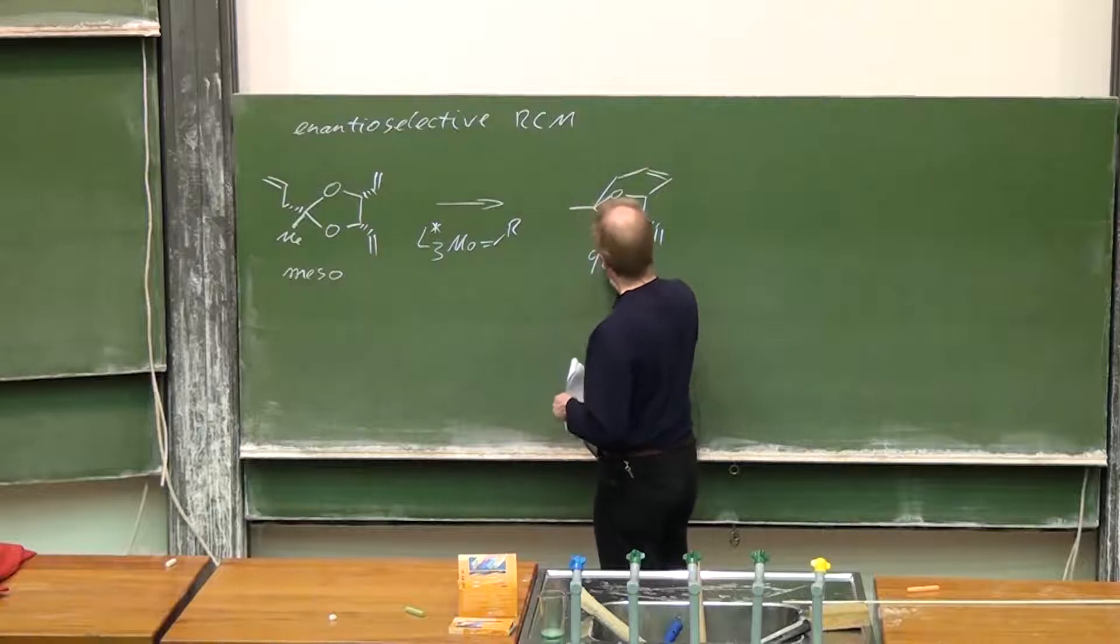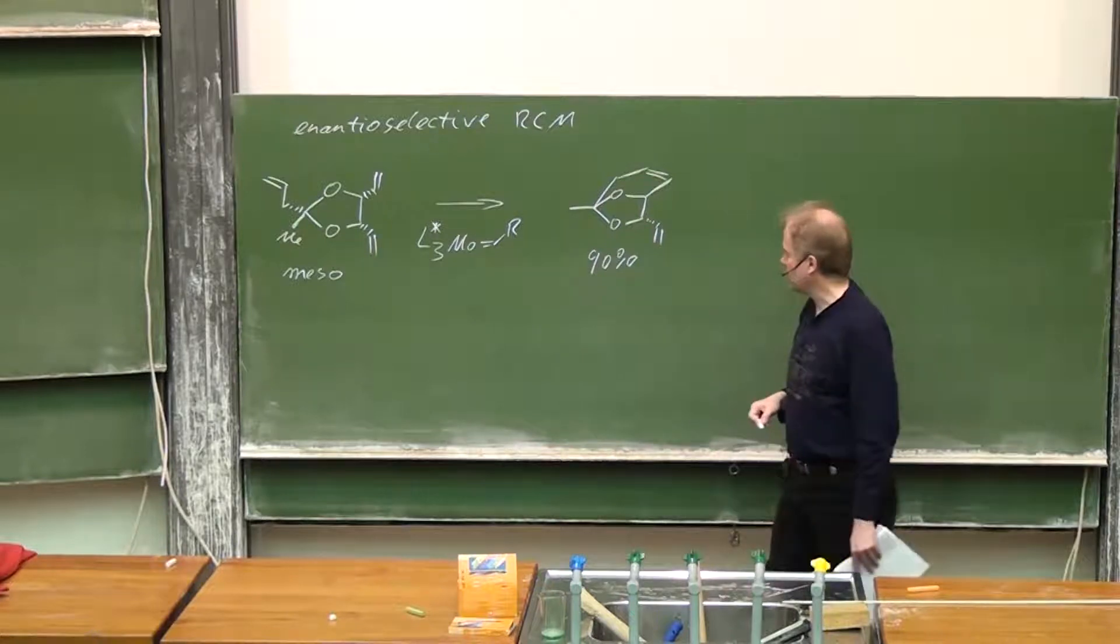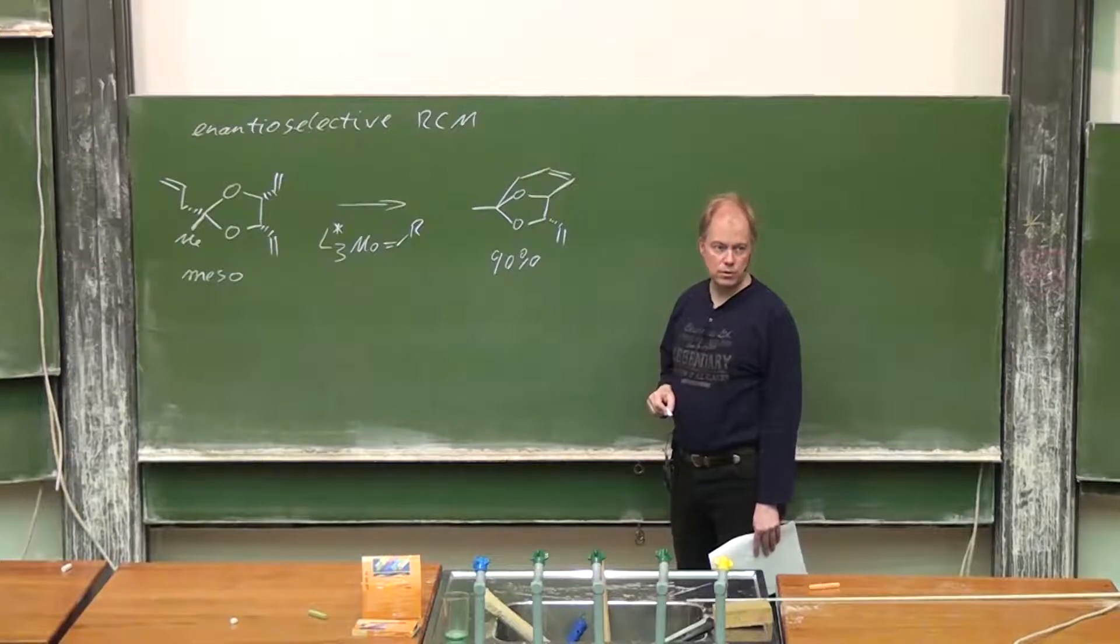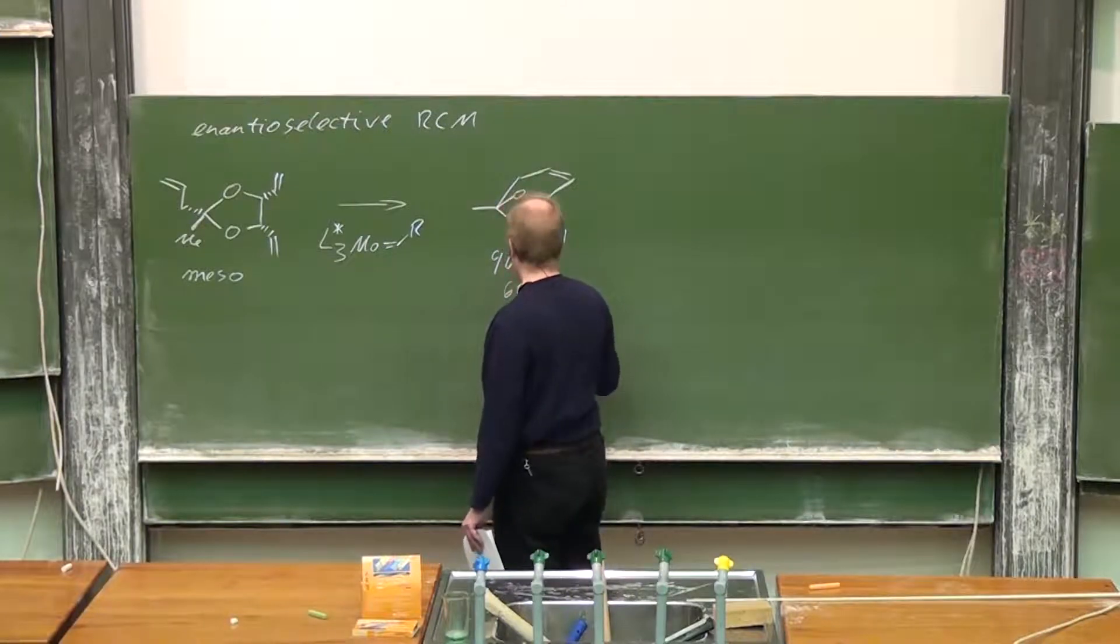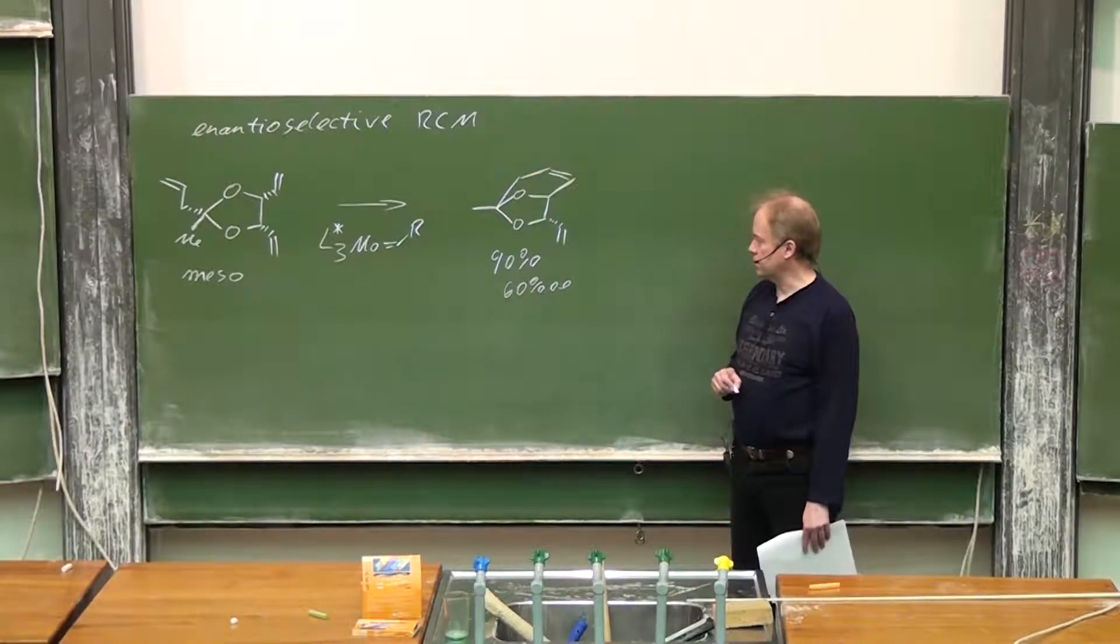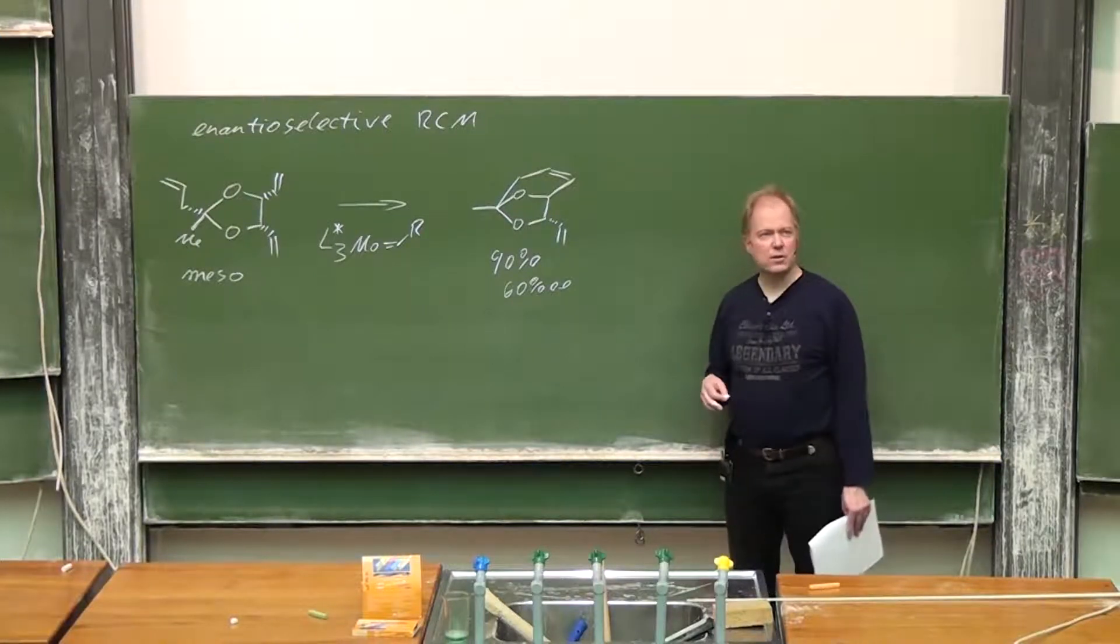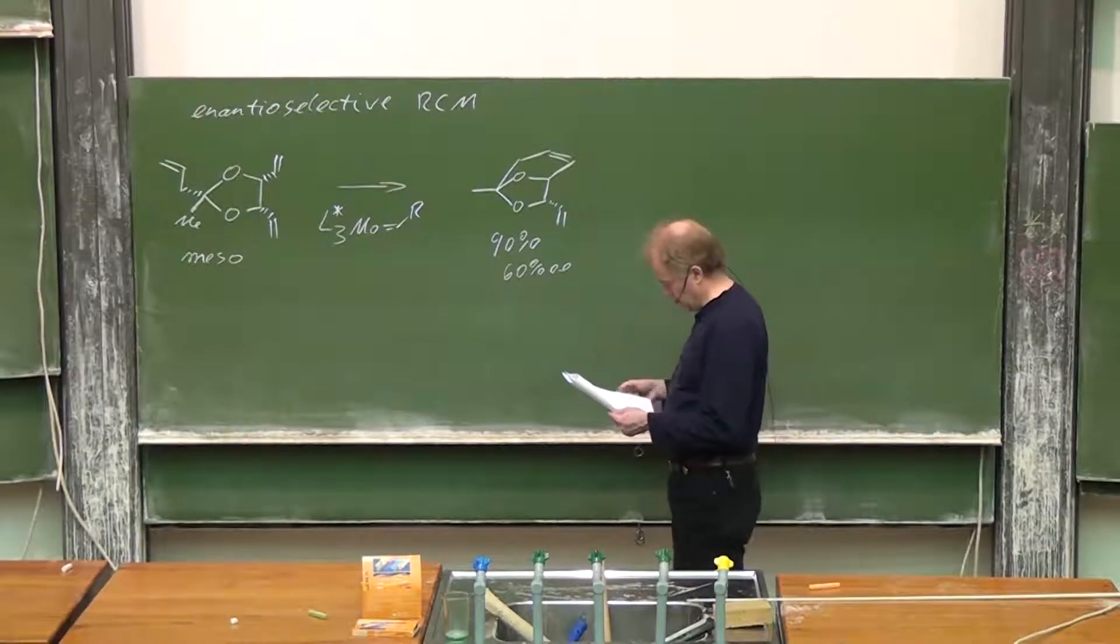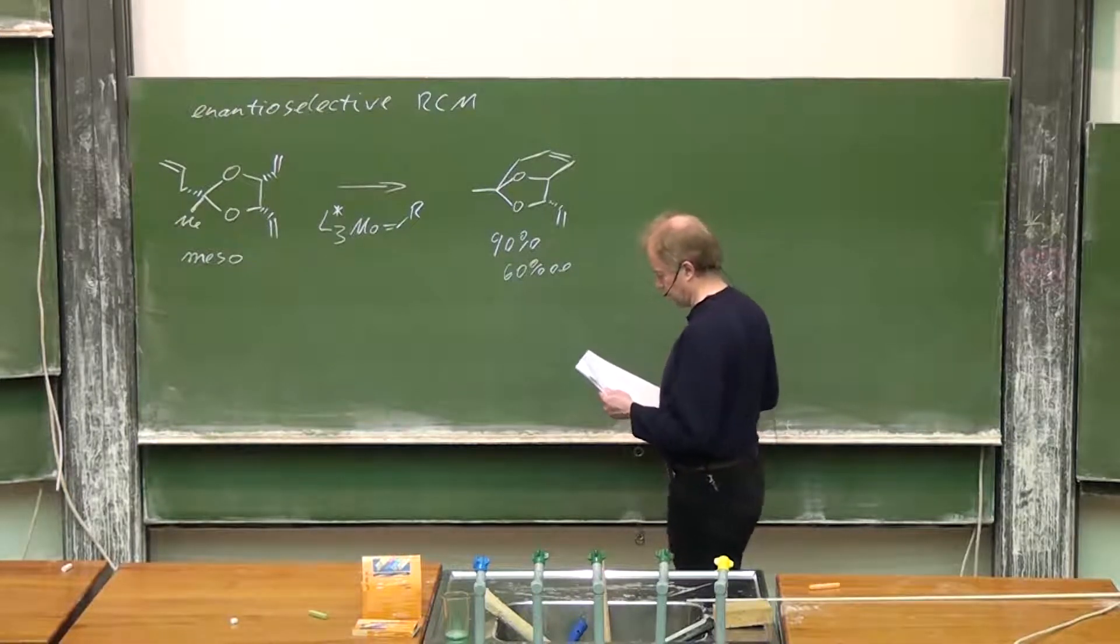Ninety percent yield of this structure, an aggregation pheromone of some beetles, and sixty percent enantiomeric excess. Not very good, but at least it was some kind of starting point and meanwhile there are more examples with better enantioselectivity.